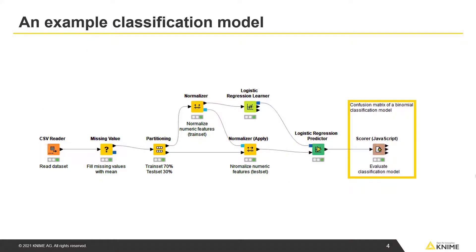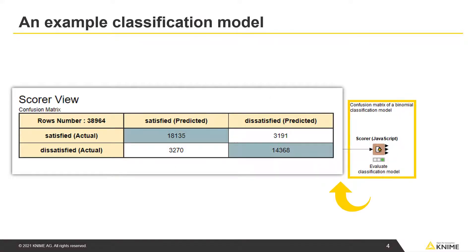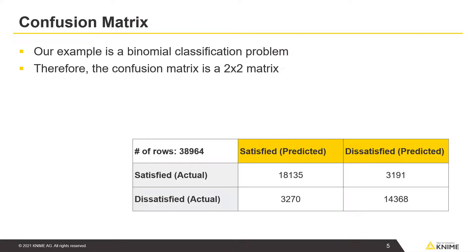The Scorer node reports the performance of the classification model in its interactive view. Here, you see the confusion matrix reporting its performance. Our example is a binomial classification problem, so the confusion matrix is a 2x2 matrix.